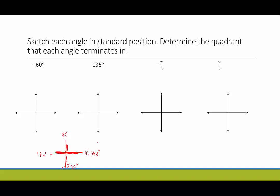When the angle measure is negative, everything moves the opposite direction. Zero degrees stays exactly where it is, but now 90 degrees goes down — that would be negative 90 degrees. Going through quadrant four to quadrant three, to have a terminal side lie on the negative x-axis would be negative 180 degrees. Coming up to the positive y-axis would be negative 270 degrees, and a complete circle going clockwise would be negative 360 degrees.